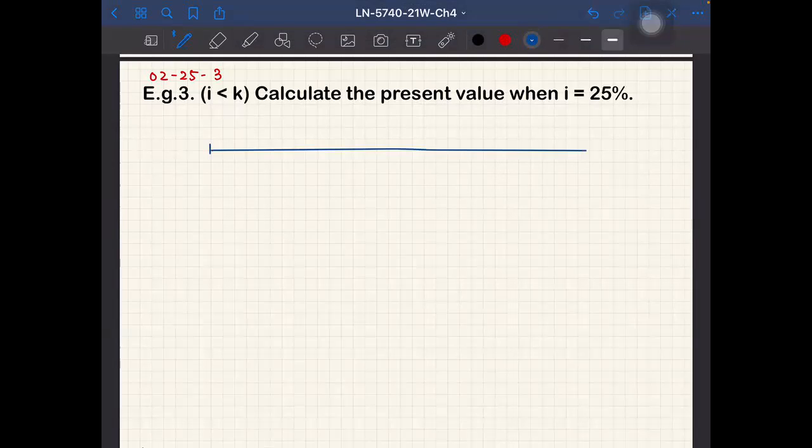So think about a little more complicated cash flow. This is actually the perpetuity, and it starts at time 0, 1, 2, 3, up to 10, then 11, 12, 13, and so on.